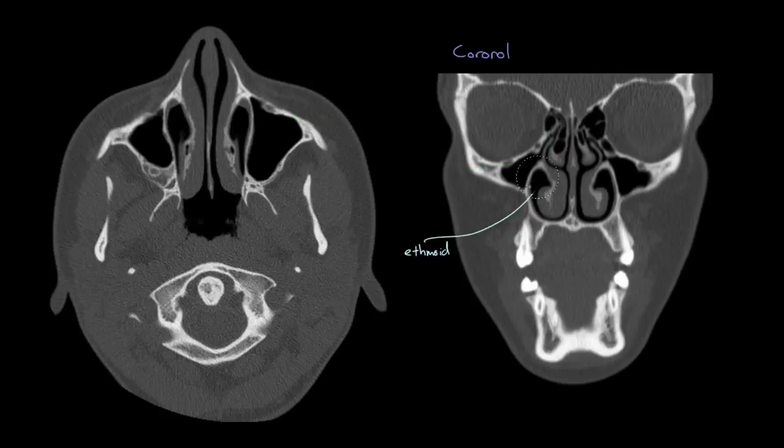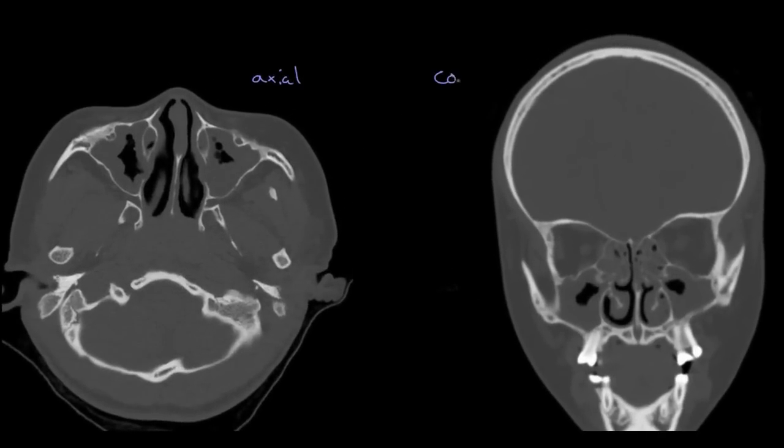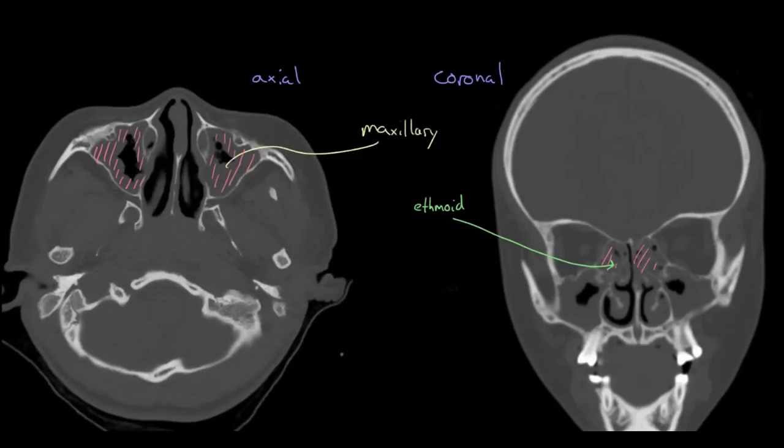Let's go to an abnormal scan. Here we have the same two images, one in axial and the other in coronal. The maxillary sinuses here and the ethmoid sinuses here. But notice they're not entirely filled in with black now. They have this rim of gray tissue that surrounds it, and in the case of the ethmoids completely fills them in. That gray tissue is the inflamed mucosa.